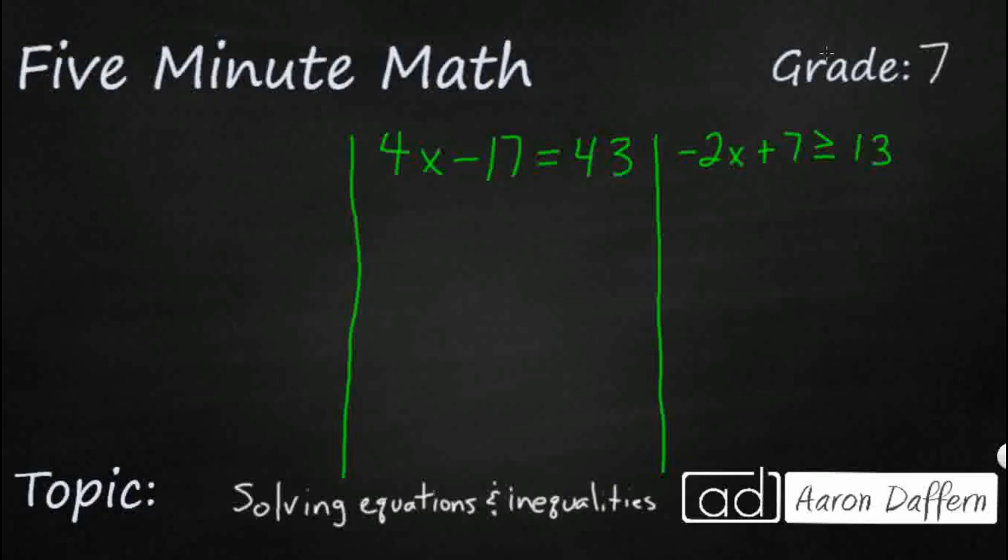So we have an equation, 4x minus 17 equals 43, and an inequality, negative 2x plus 7 is greater than or equal to 13. And how do we solve these?